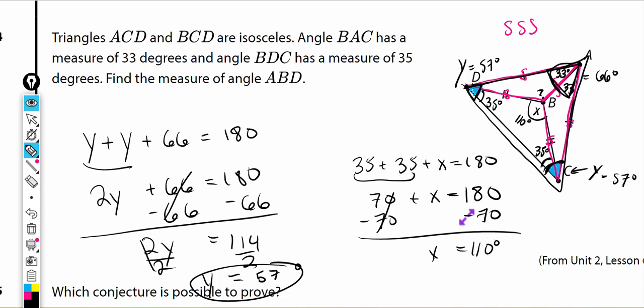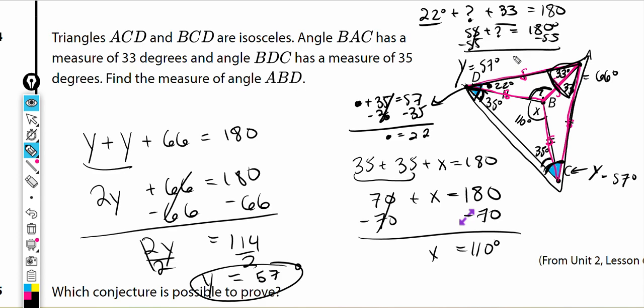If y is equal to 57 degrees, then this guy right here is 35, so this guy over here plus 35 is equal to 57 degrees. I'm going to subtract 35 from both sides, and I get that the dot right there is equal to 22 degrees. Finally, to get my question mark, I know that 22 degrees plus question mark plus 33 degrees has to equal 180 degrees. 33 plus 22 is going to get me 55 plus question mark is equal to 180 degrees. I subtract 55 from both sides, and I get question mark is equal to 125 degrees.